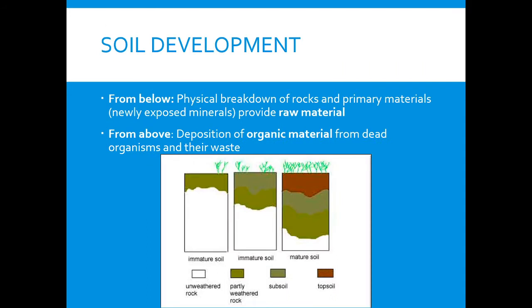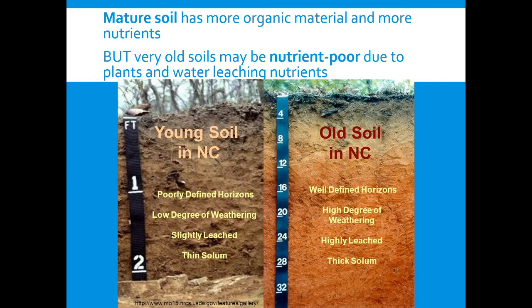How does soil develop? There are two ways: from below and from above. From below, the physical breakdown of rocks and primary materials — including newly exposed minerals — gives you the raw material. From above, the deposition of organic material as organisms die creates more nutrients for the soil. An immature soil has a lot of unweathered rock, whereas a more mature soil has three layers: topsoil which is nutrient-rich, subsoil, and bedrock. Older soils have more organic material, but old soils can also be nutrient poor if plants and water have been leaching nutrients out.